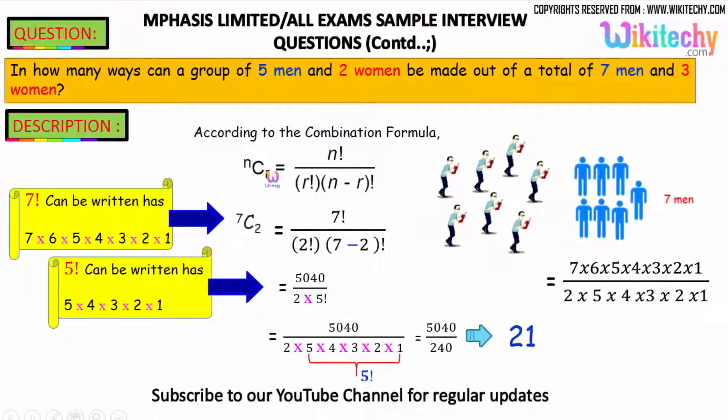So NCR, the combination formula is N factorial divided by R factorial into (N minus R) factorial. So 7C2 we got 7 factorial divided by 2 factorial into (7 minus 2) factorial. 7 factorial can be written as 7×6×5×4×3×2×1, and 2 factorial is 2×1 into 5 factorial. So 5 factorial is 5×4×3×2×1. So 5040 in the top divided by 240. Cancelling this one you got the answer as 21.